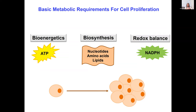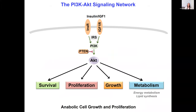Cancer cells need to maintain their bioenergetics in the form of energy or ATP. They need to sustain and increase biosynthesis to produce more nucleotides, amino acids, and lipids in order to divide, because every cell division requires cells to double their biomass. The cells also need to maintain their redox balance in the form of NADPH, which is the currency of reducing power. This will be the topic of what I'll tell you about today.